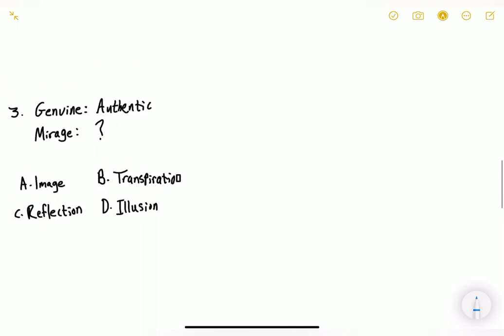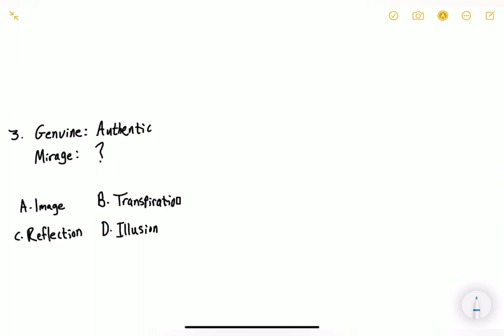Now let's move on to question number three. Question number three says genuine, authentic, mirage, question mark. So we're supposed to identify the relationship first and foremost. So the relationship between genuine, authentic is that they are a pair of synonyms, meaning that we're supposed to find the pair of synonyms in the bottom.